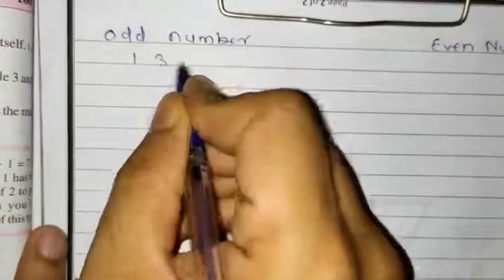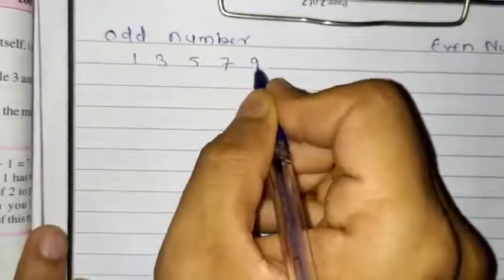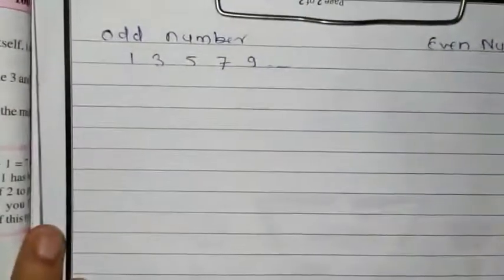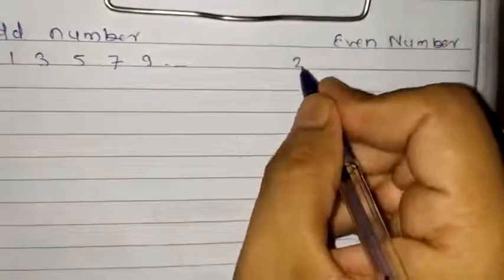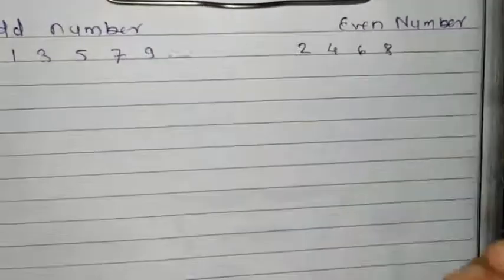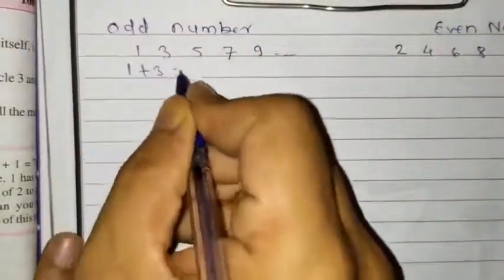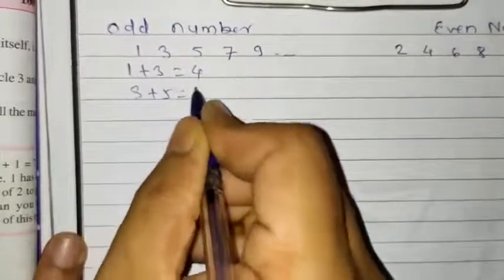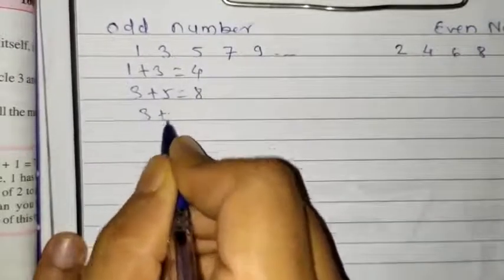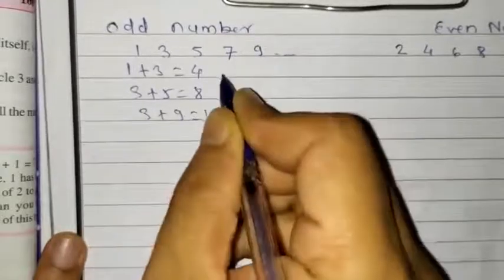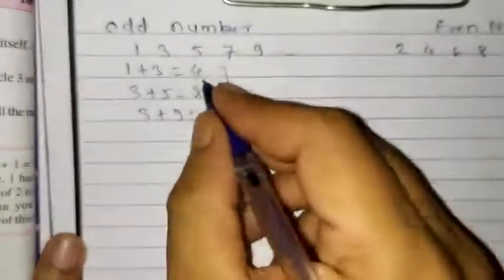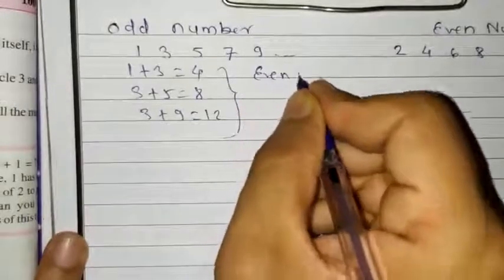In odd numbers, as you are aware, the odd numbers are like 1, 3, 5, 7, 9, and so on. These are the odd numbers. And the even numbers are like 2, 4, 6, 8. Now, if you take the addition of any two odd numbers like 1 plus 3 is 4, 3 plus 5 is 8, and 3 plus 9 is 12. So carefully observe the result — we are getting an even number.